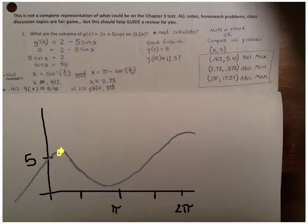Right about here, that's a relative max. Then we have an absolute or global minimum at 2.73 comma 0.878. And then we have our absolute maximum here up at 2π comma 17.57. Obviously, this is not drawn to scale, but this is just to demonstrate what's going on in this picture.